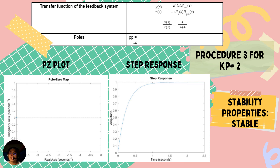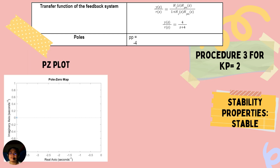For Kp = 2, using MATLAB functions, the simplified transfer function was defined as 4/(s+4), having a pole at negative 4. The PZ plot and step response suggest that the transfer function is stable.